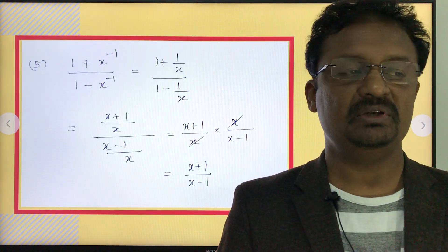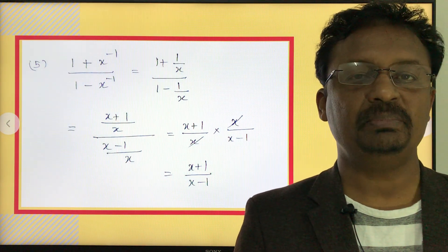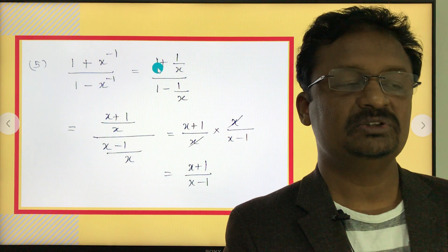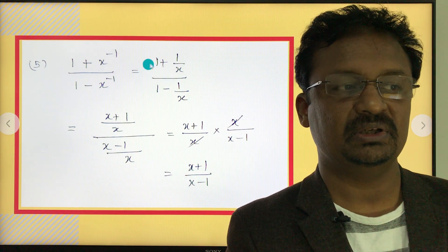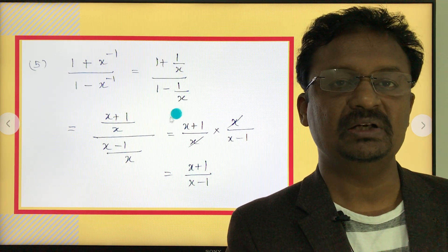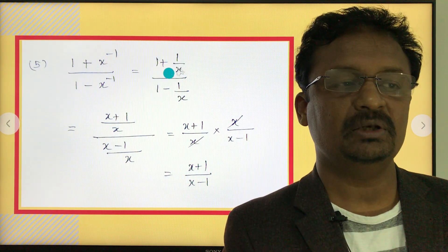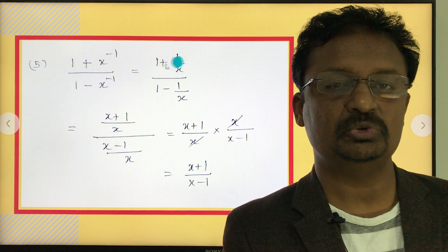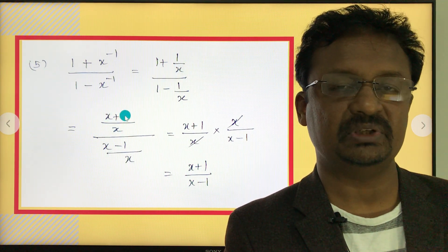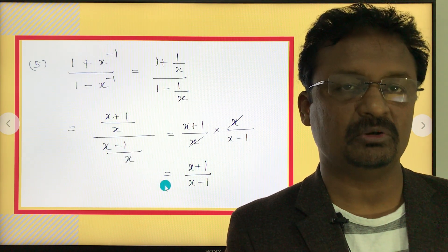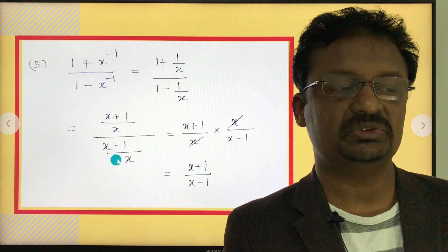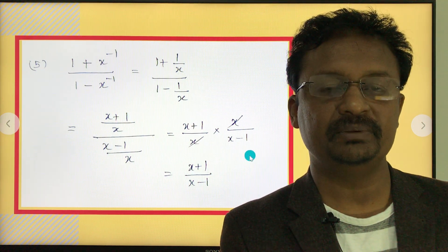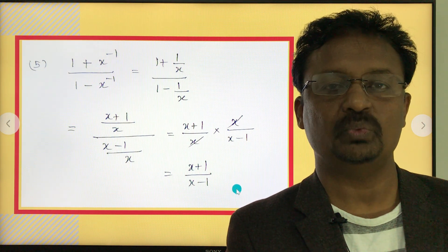Another challenging standard problem: simplify the quantity 1 plus x to the power of negative 1, divided by 1 minus x to the power of negative 1. First apply the negative exponent rule: x to the power of negative 1 becomes 1 over x. This gives the numerator as 1 plus 1 over x, and the denominator as 1 minus 1 over x. Taking the LCM as x for both: numerator becomes x plus 1 over x, and denominator becomes x minus 1 over x. Simplifying by cancelling x, the result is x plus 1 divided by x minus 1.